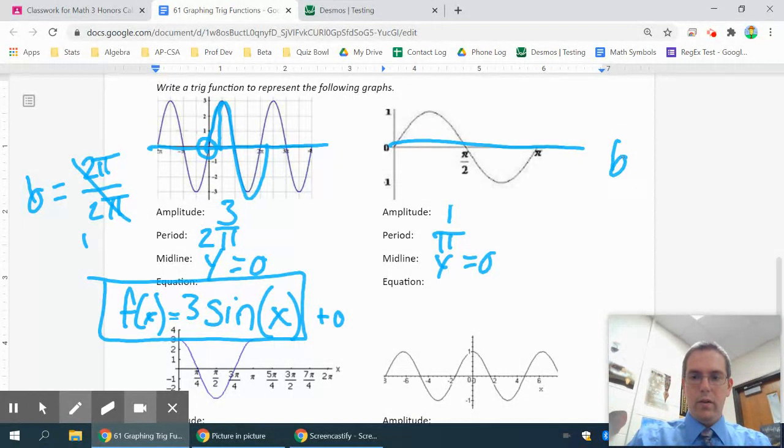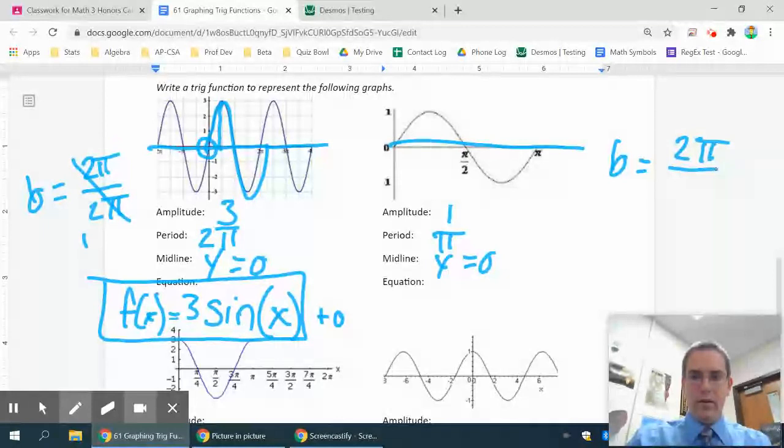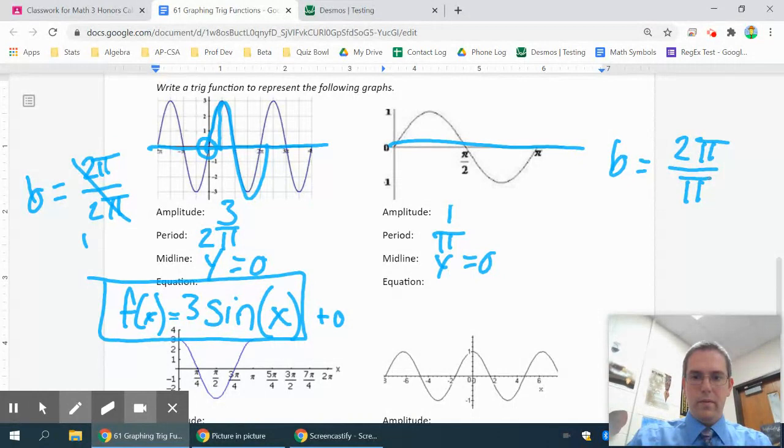So what I'm going to need to do to figure this out is my b value is going to be 2 pi divided by your period.